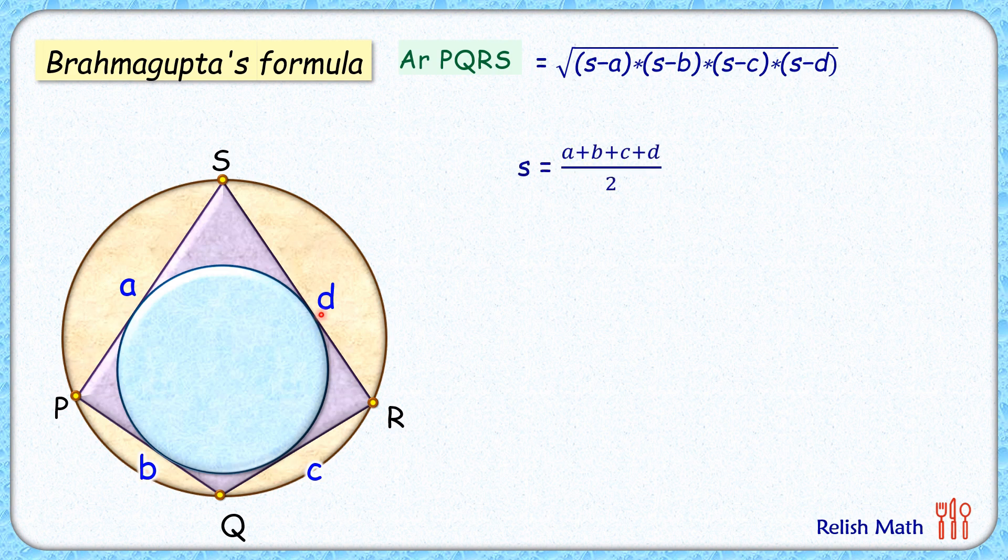Also, with respect to the blue circle, it's a tangential quadrilateral. In the case of tangential quadrilaterals, we know that the sum of opposite sides are equal, that is, a+c = b+d.